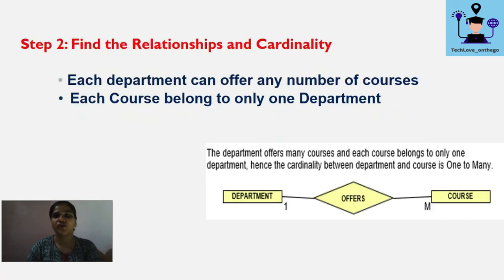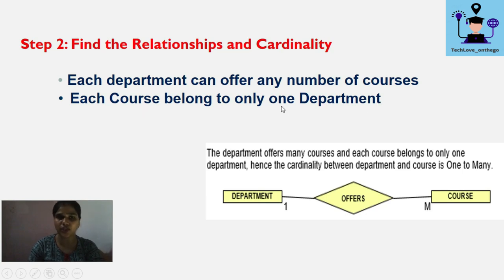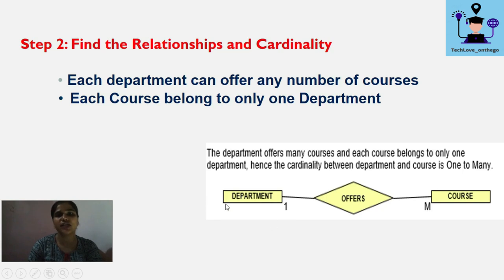Next: each department can offer any number of courses, and each course belongs to only one department. One instance of a department can offer many courses, but one instance of a course is offered by only a single department. From the department side this is one-to-many, and from the course side this is many-to-one.